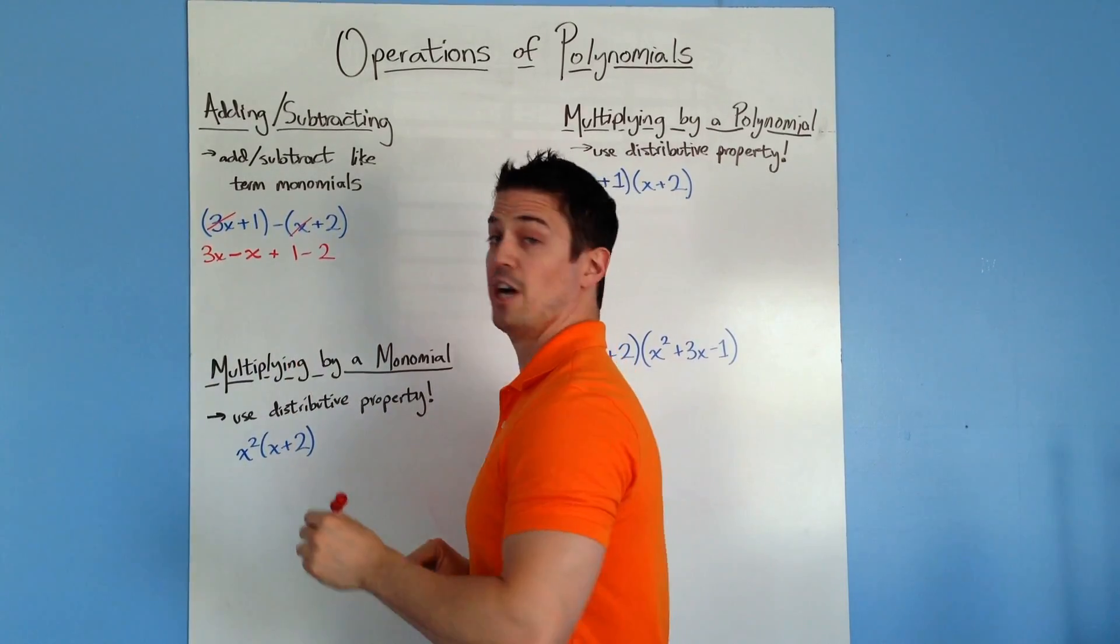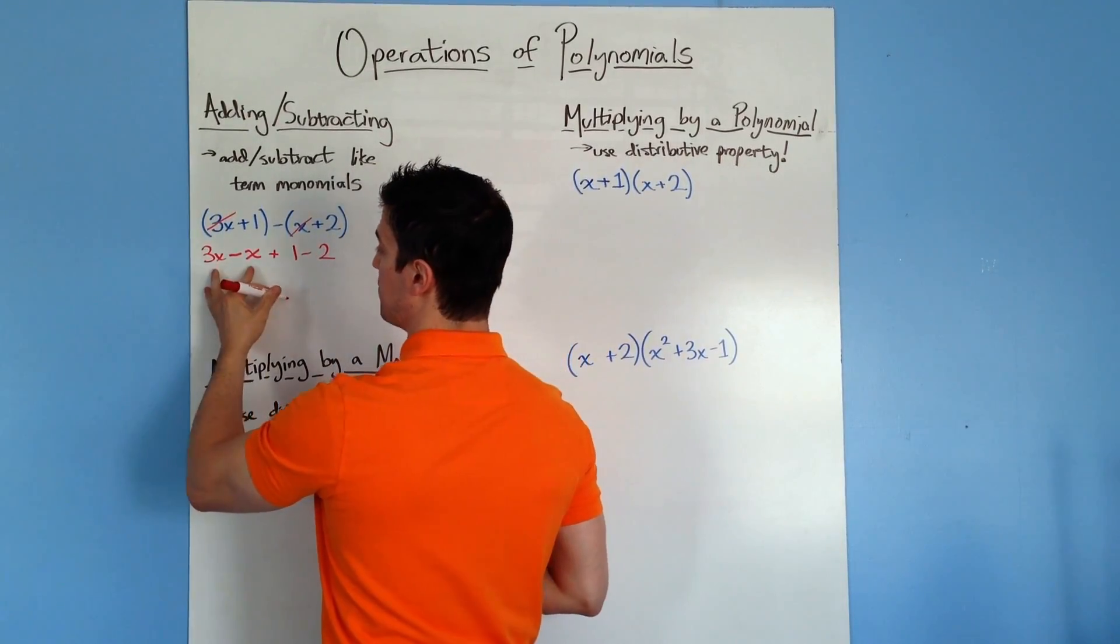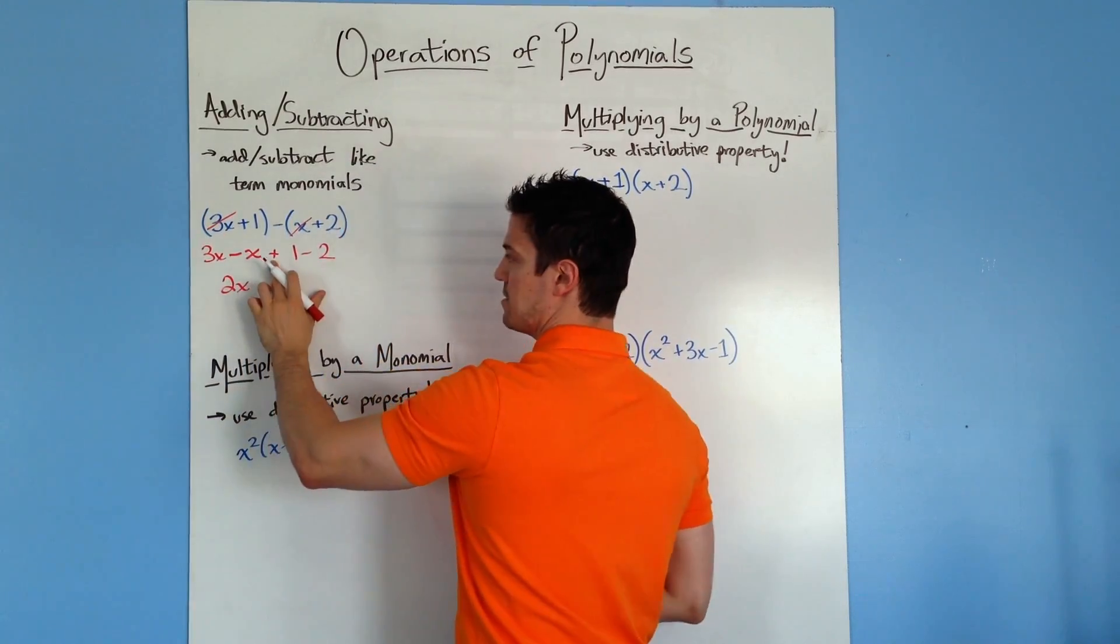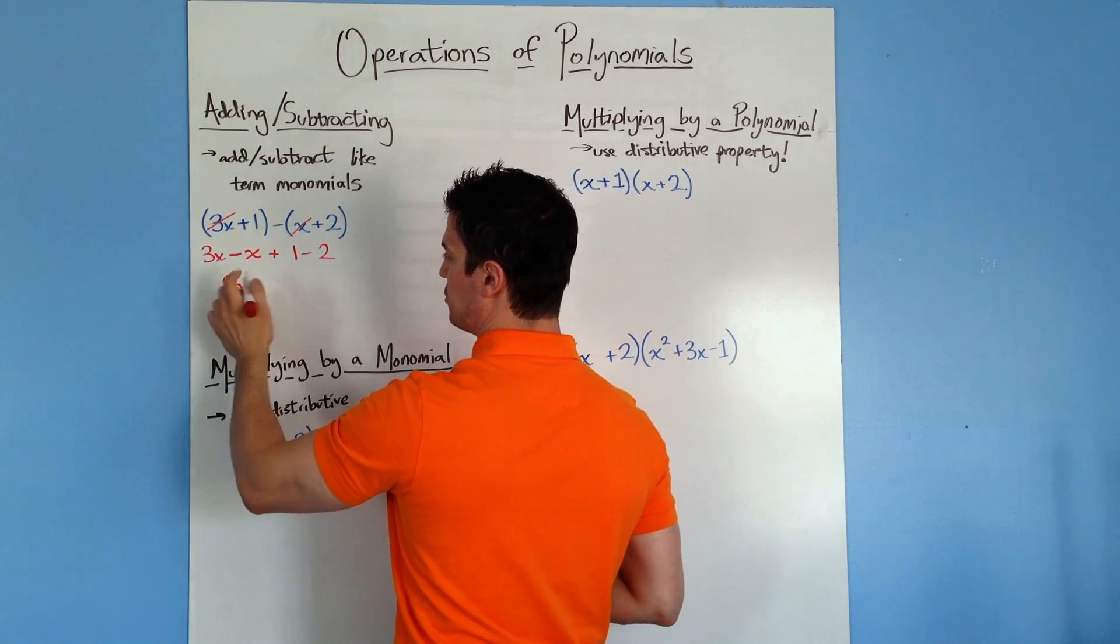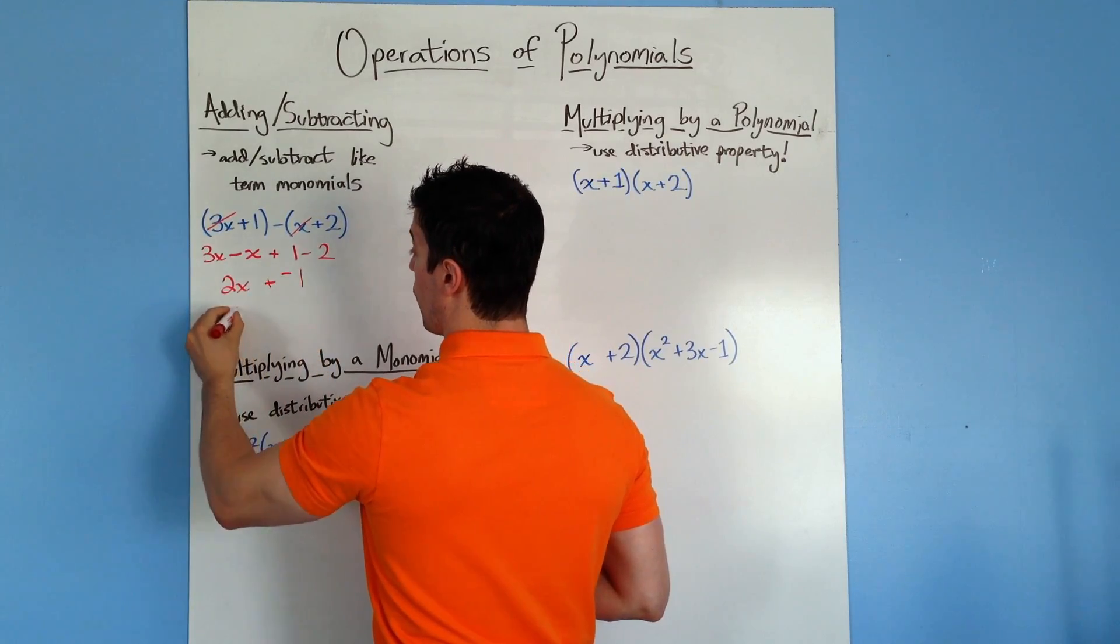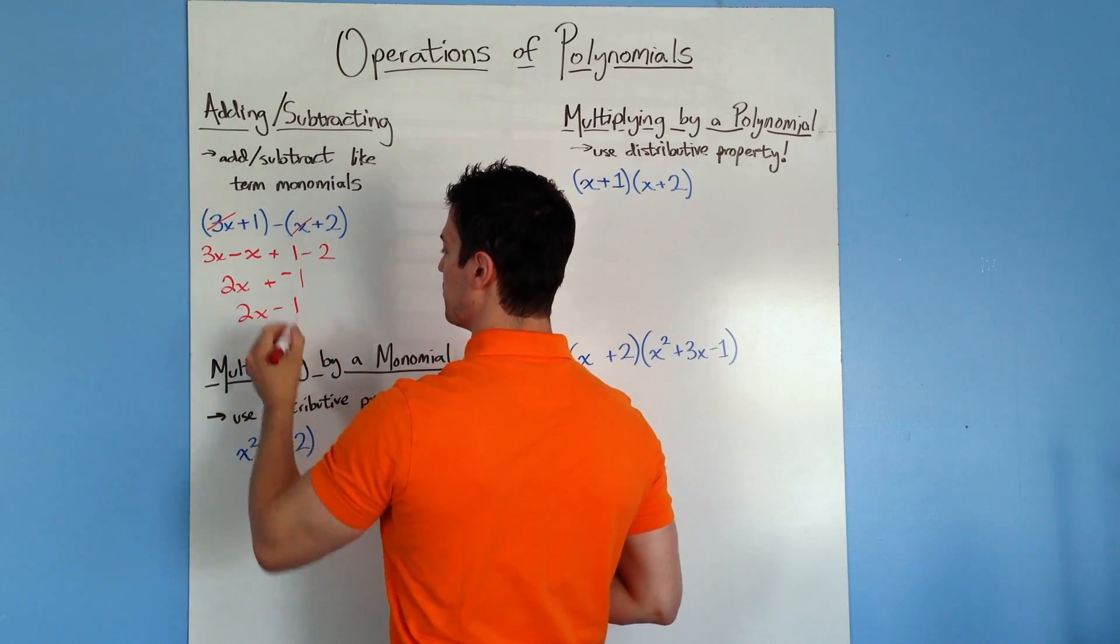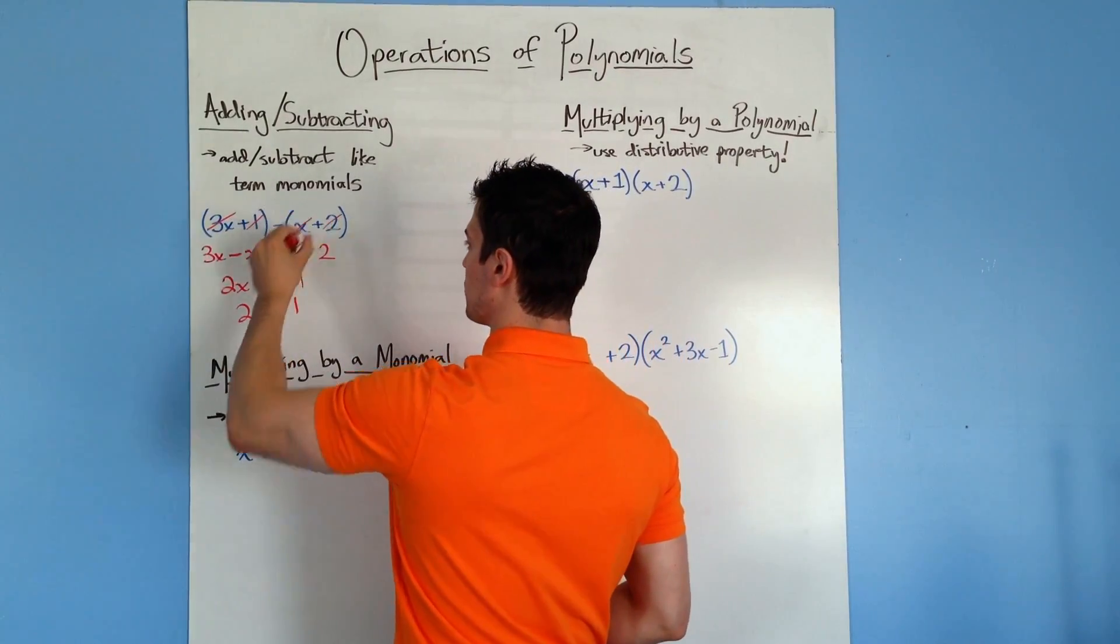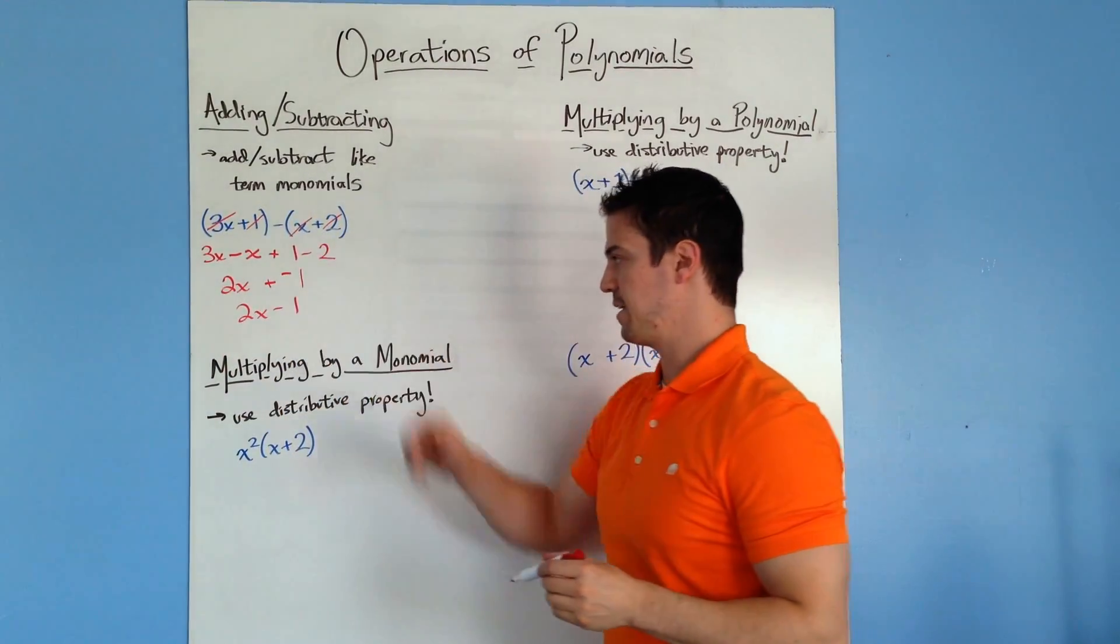So now I have like terms matched up. Now all I have to do is do 3x minus x, which would be 2x, plus 1 minus 2. Well, 1 minus 2 is negative 1, so you can do plus negative 1 or you can write 2x minus 1 as your answer. So I used all my terms, I just put lines through them, and you have your answer.